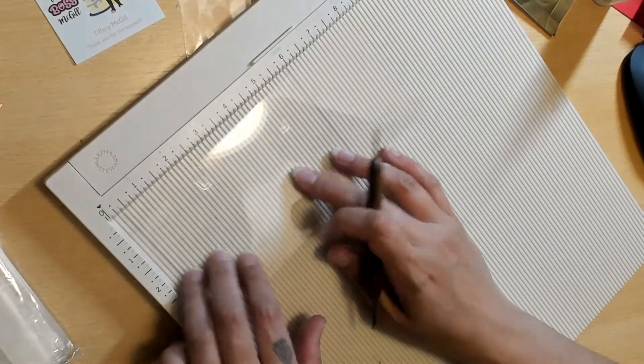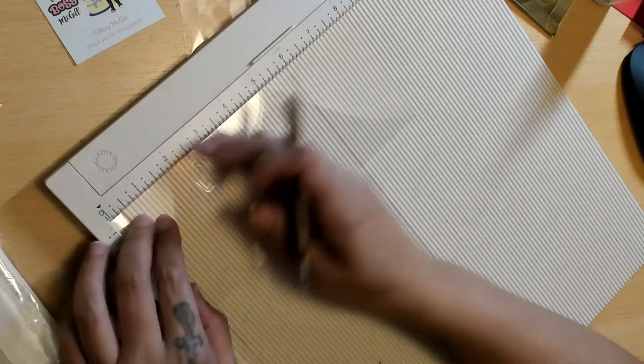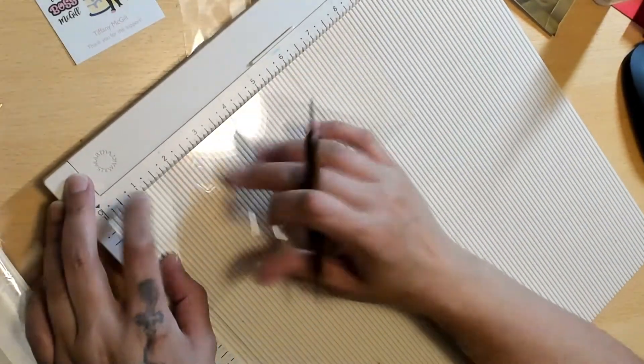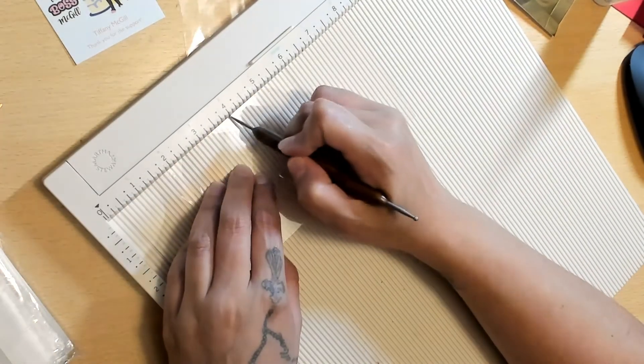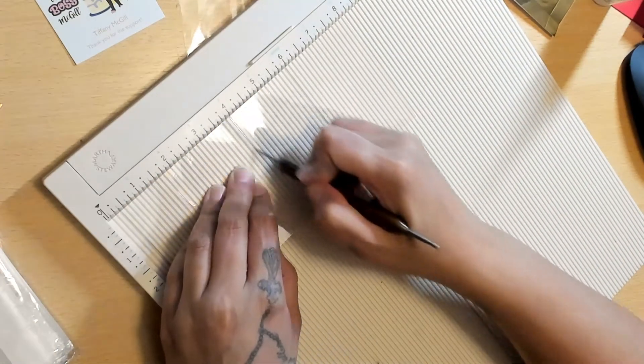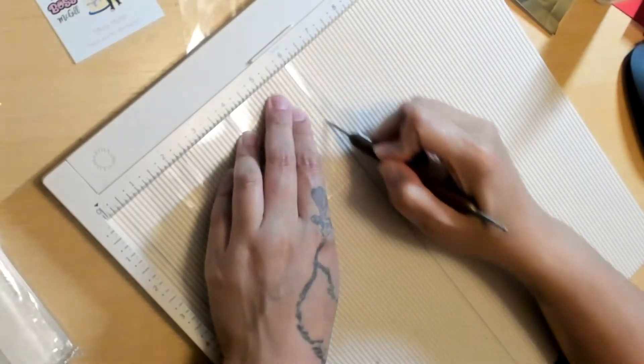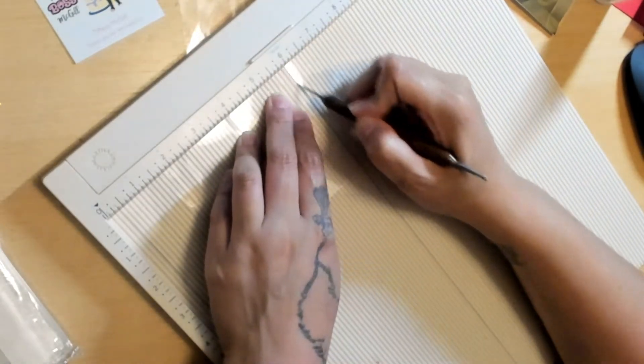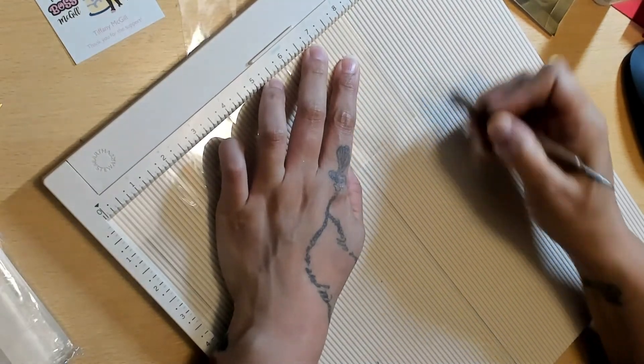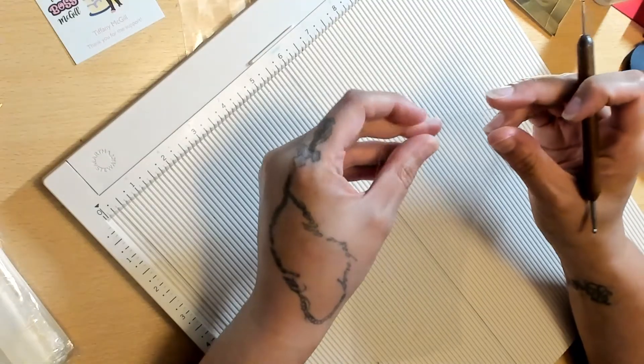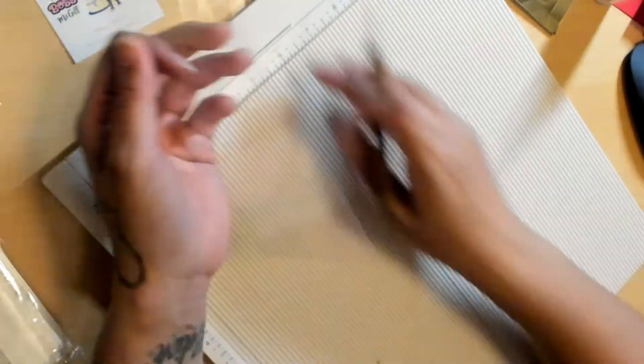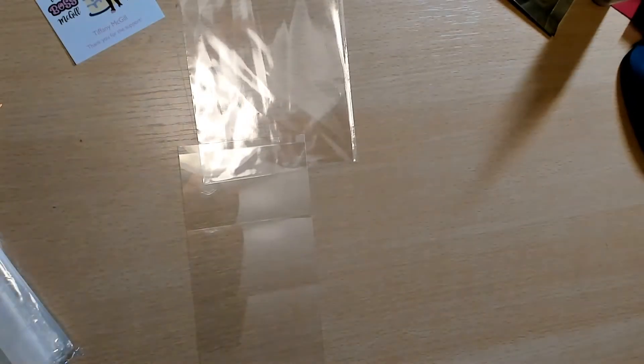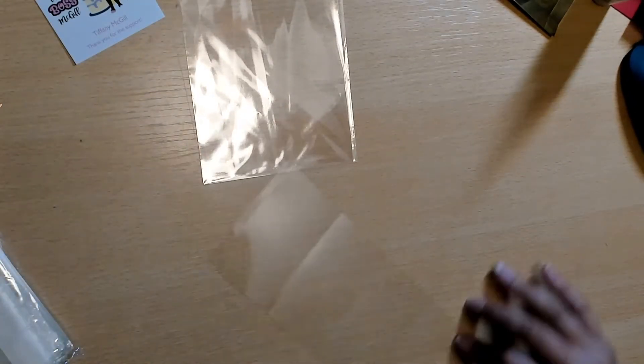And we're going to score it at two, four, six, and eight. So you have the tiniest little quarter inch flap right here.